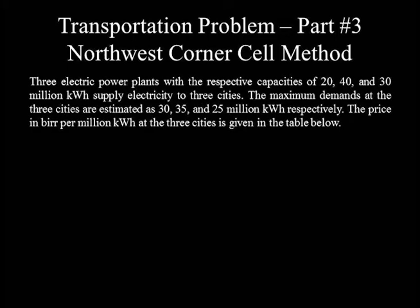Three electric power plants with respective capacities of 20, 40 and 30 million kWh supply electricity to three cities. The maximum demands at the three cities are estimated as 30, 35 and 25 million kWh respectively. The price in bill per million kWh at the three cities is given in the table below.